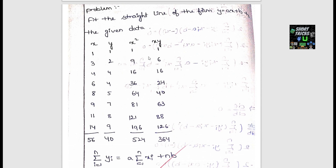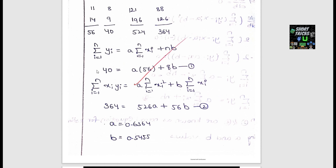This is fitting of a straight line. The normal equations for a straight line fit are very important. The first normal equation is: Σy = a·Σxi + nb, or equivalently na + Σxi.